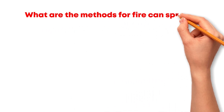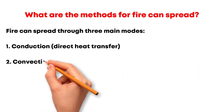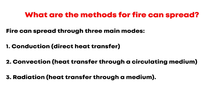Fire can spread through three main modes: conduction (direct heat transfer), convection (heat transfer through a circulating medium), and radiation (heat transfer through a medium). Understanding these modes is crucial for effective fire prevention and suppression.